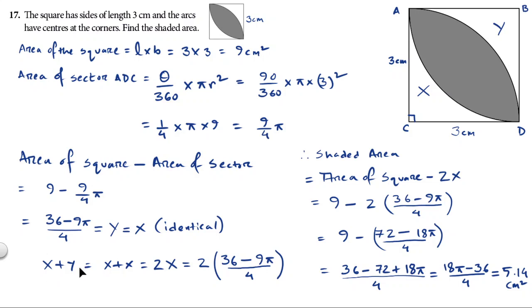Now in order to find the shaded area, I need to use the area of the square and take away the total of X and Y. So let's solve X and Y first. X plus Y will be X plus X. I can call Y as X since Y and X are identical. So X plus Y equals 2X, which is equal to 2 multiplied by the value of this, because this was the value for X.